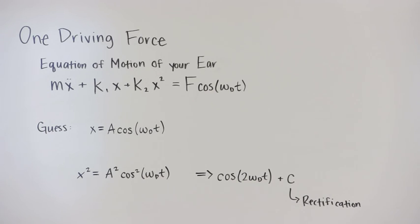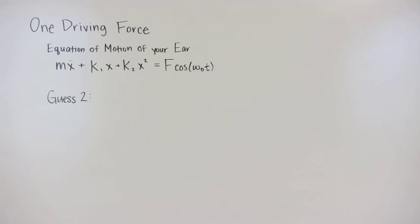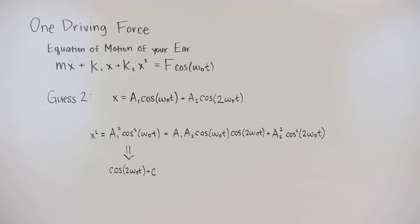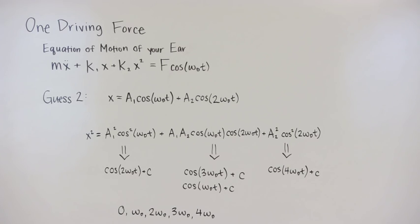But what if our guess for x is not accurate enough? This time, we will guess x to have two terms. As you can see, when the non-linear squared term becomes significant, things get messy. Many more terms are produced, but we clearly get multiples of the fundamental driving frequency.